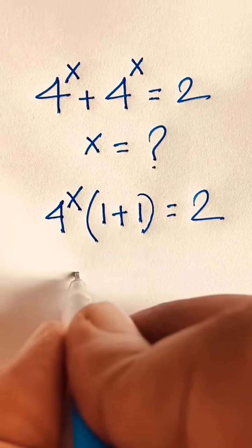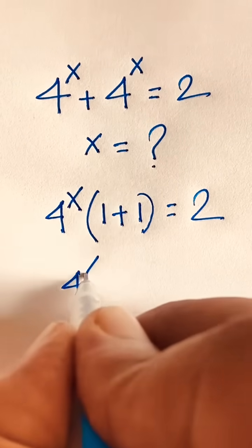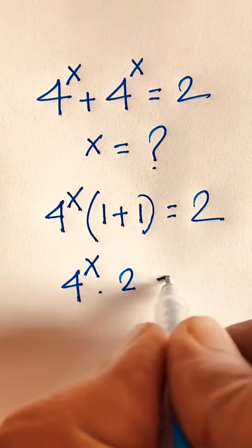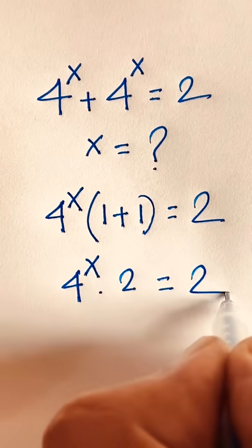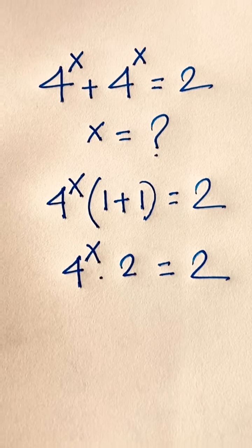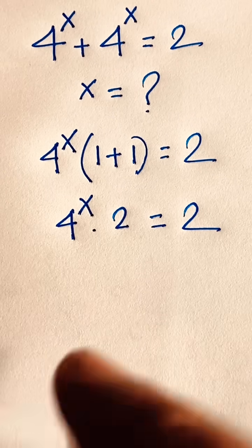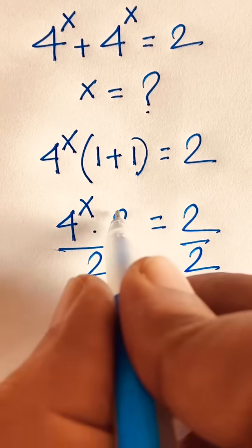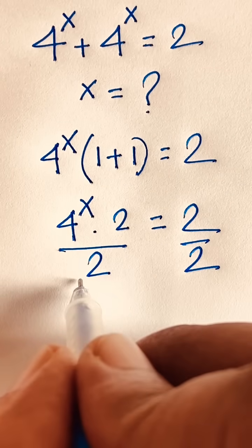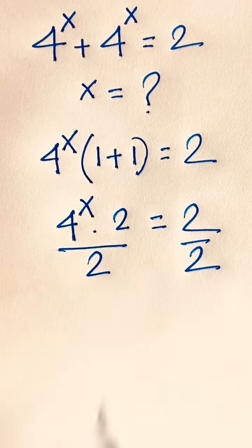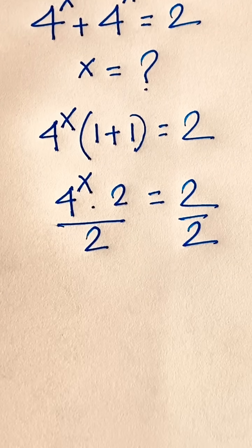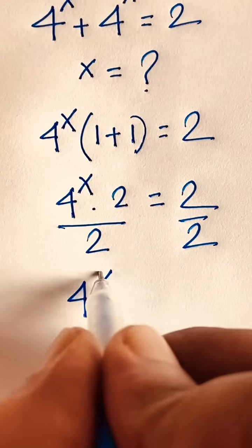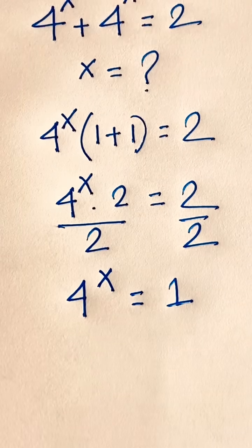So 4 to the power x times (1 plus 1) equals 2. Then if you divide both sides by 2, the 2s cancel out. We find that 4 to the power x is equal to 1.